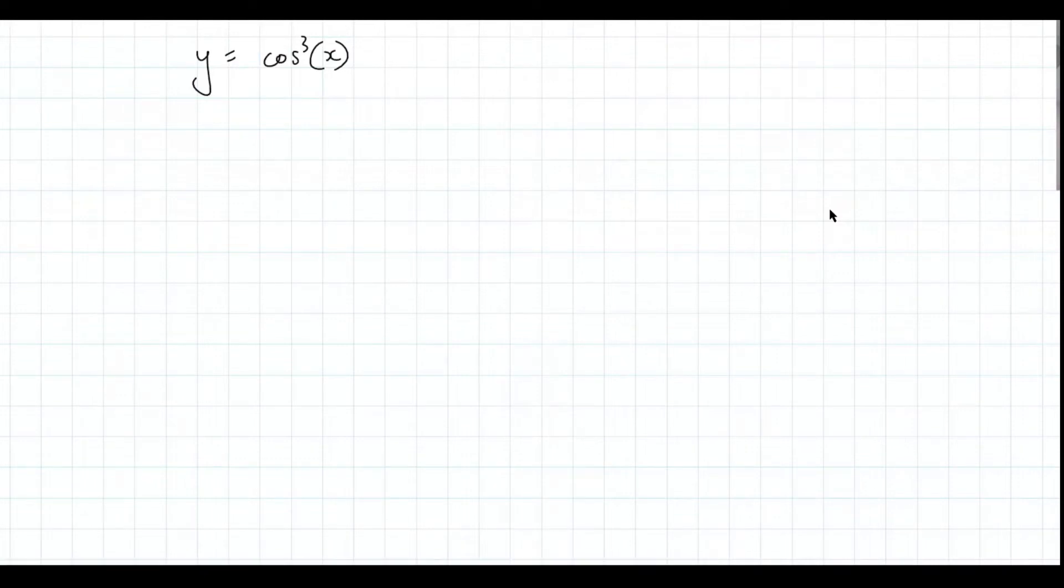Alright, so what this means is it's just like a way to write cos x all of this cubed. Okay, so you're kind of doing cos x times cos x times cos x. Yeah. So does that make it easier?